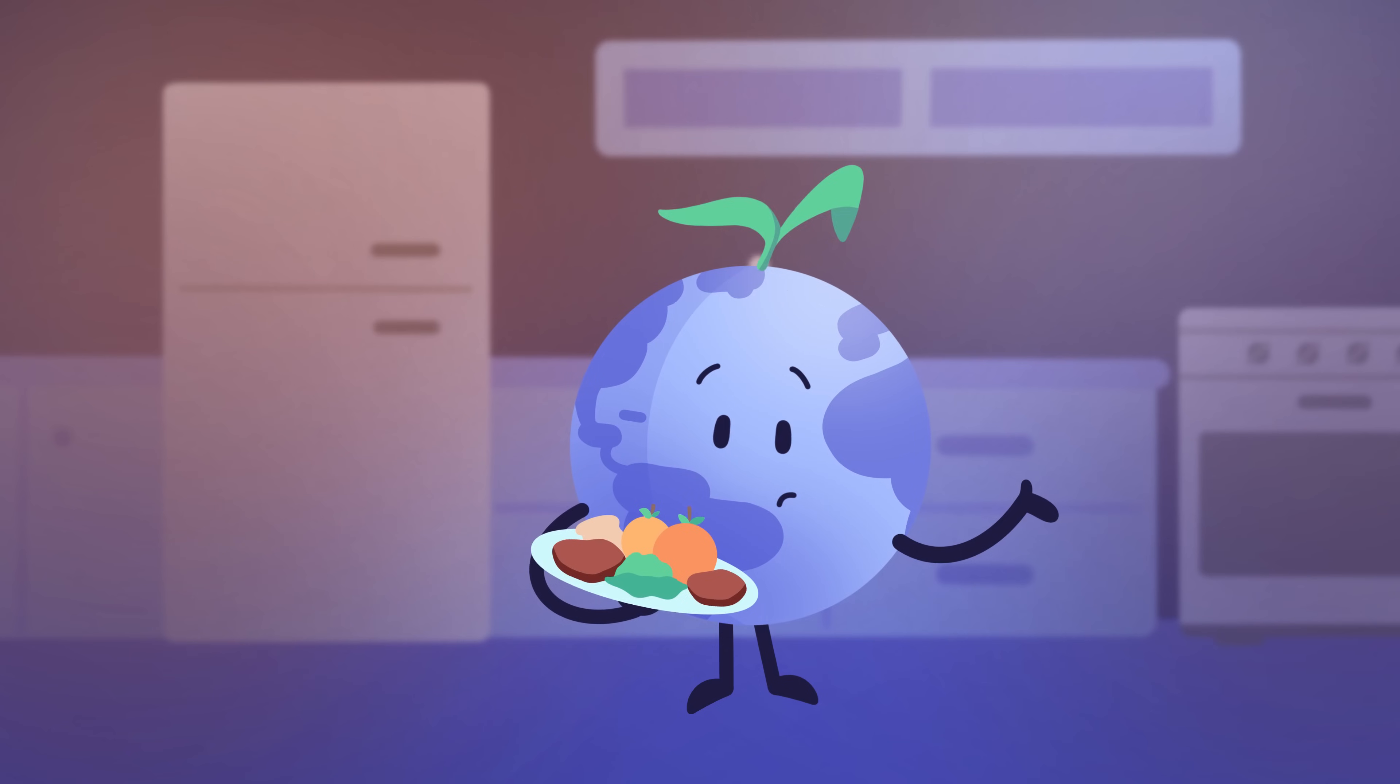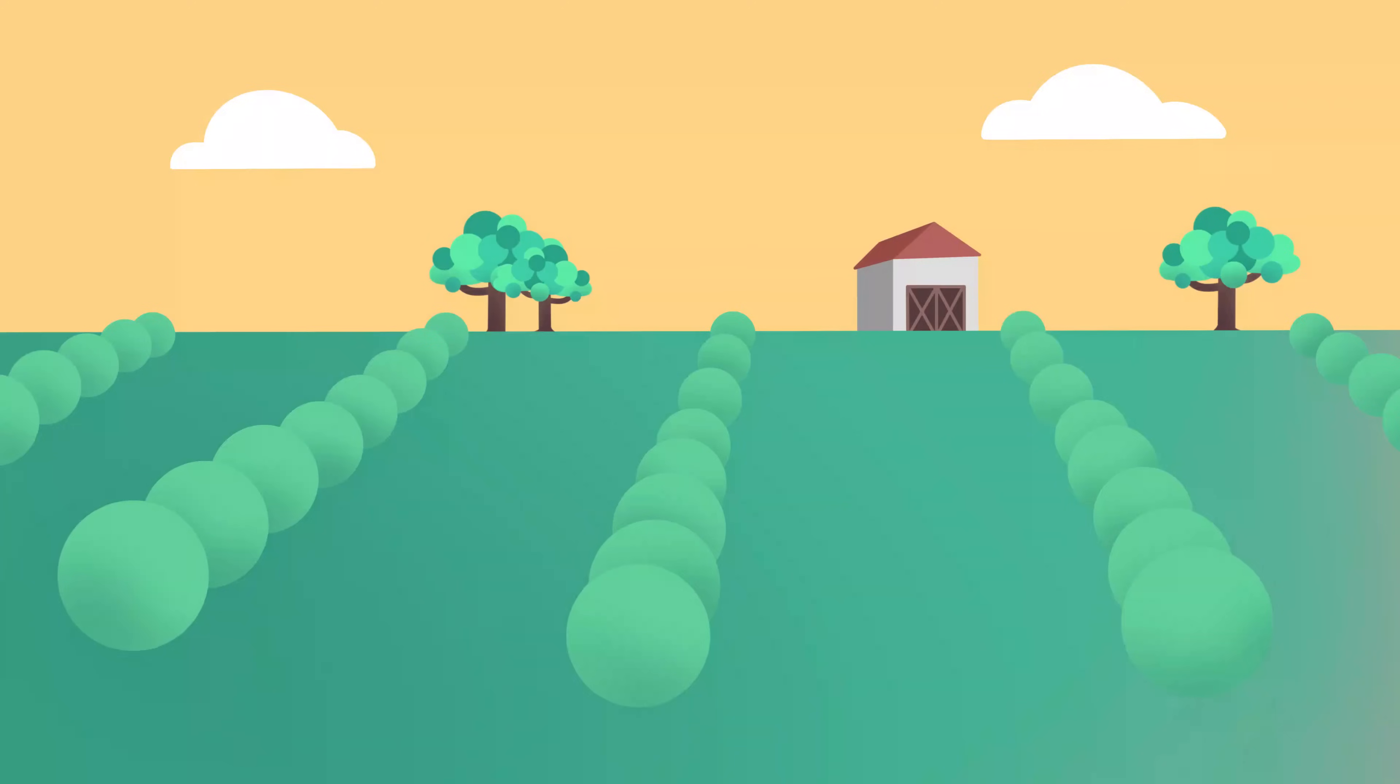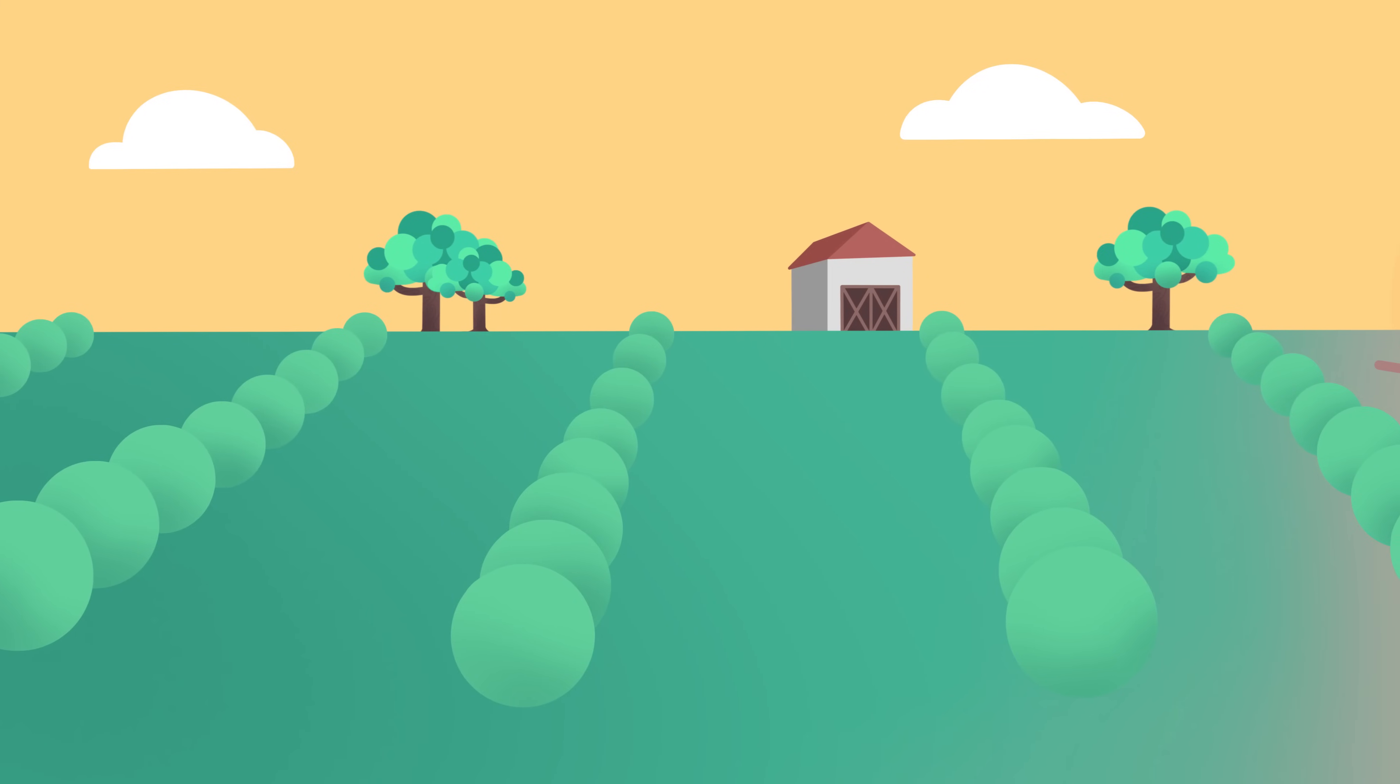So, what can we do to reduce all of this food loss and waste? Well, let's begin at the start of the supply chain. We need to reduce food losses on the farm itself.